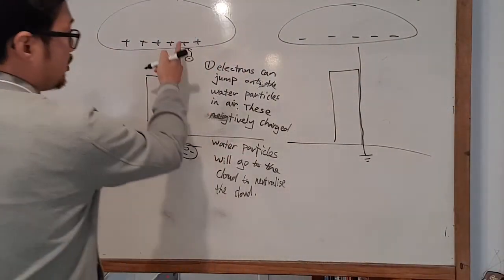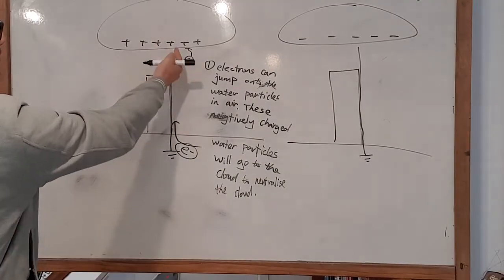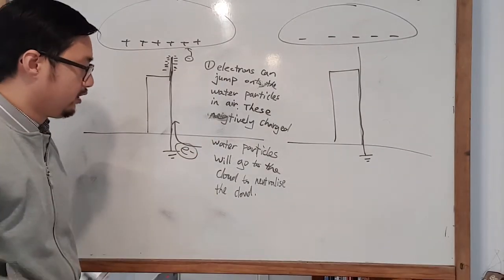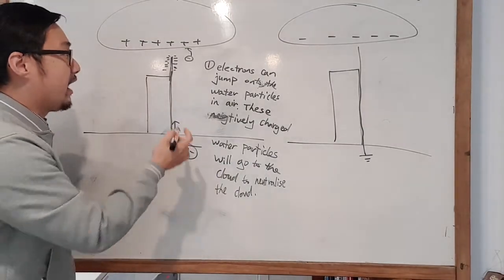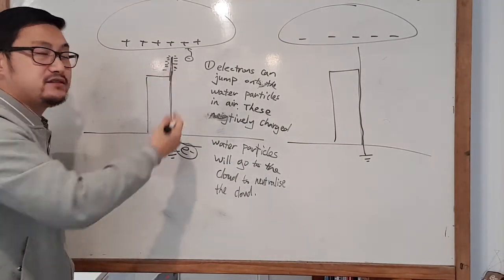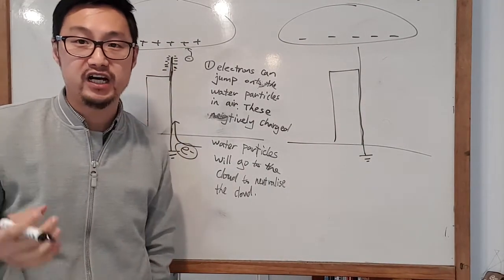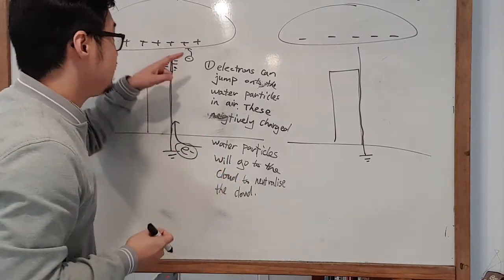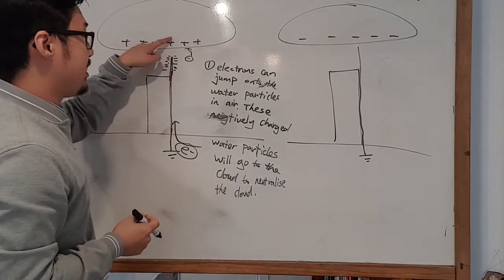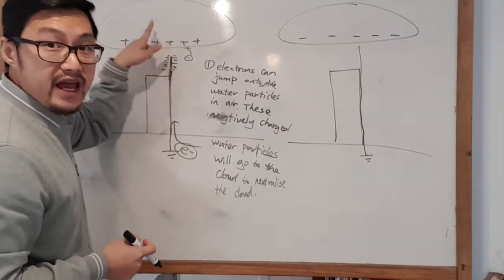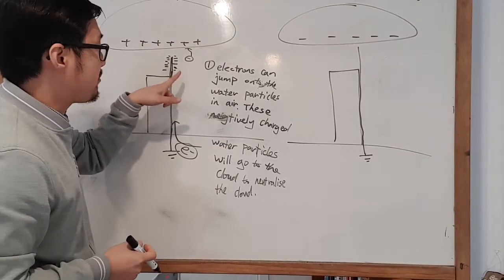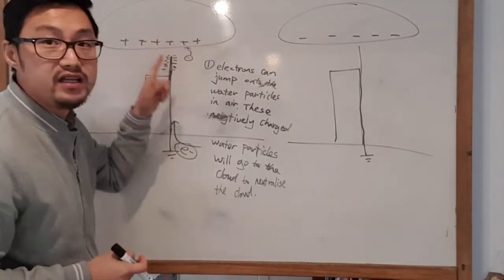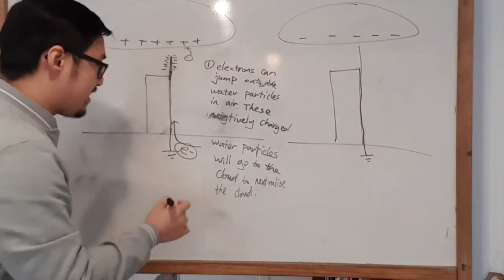The water droplets become negatively charged, and this negative charge slowly moves upward to neutralize the positive cloud. Because of this, there's less chance of a lightning strike — for lightning to happen you need a very large charge buildup, but the slow neutralization prevents that.